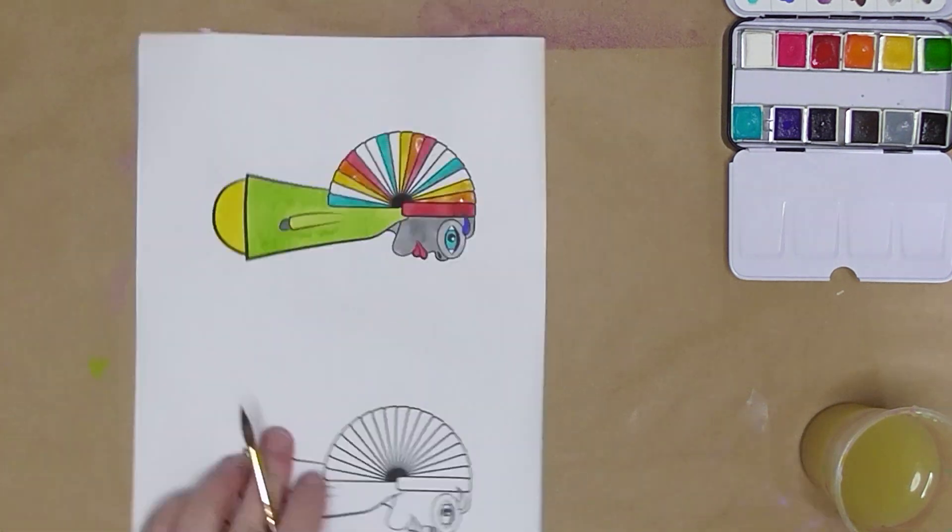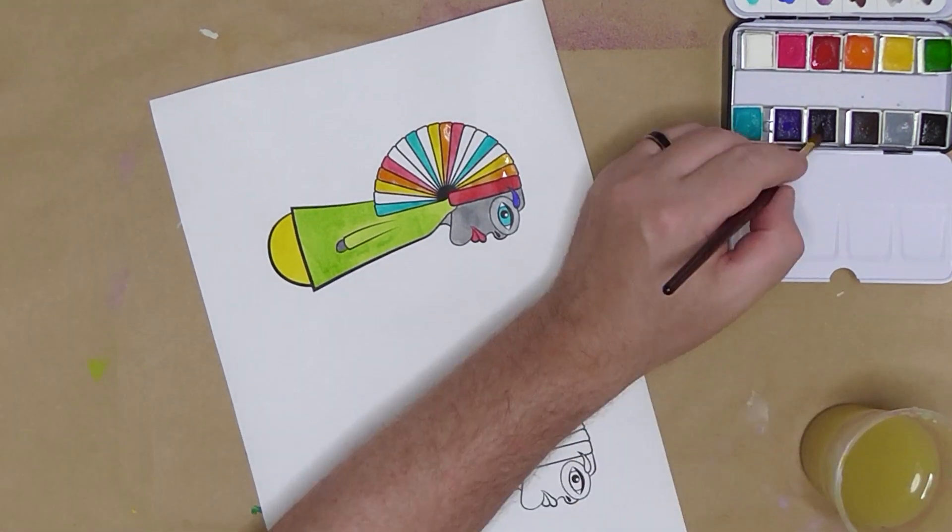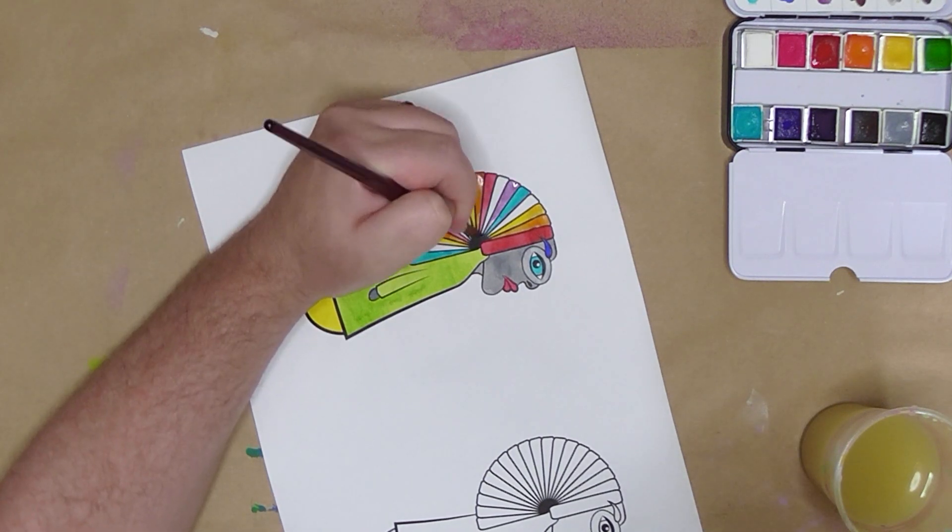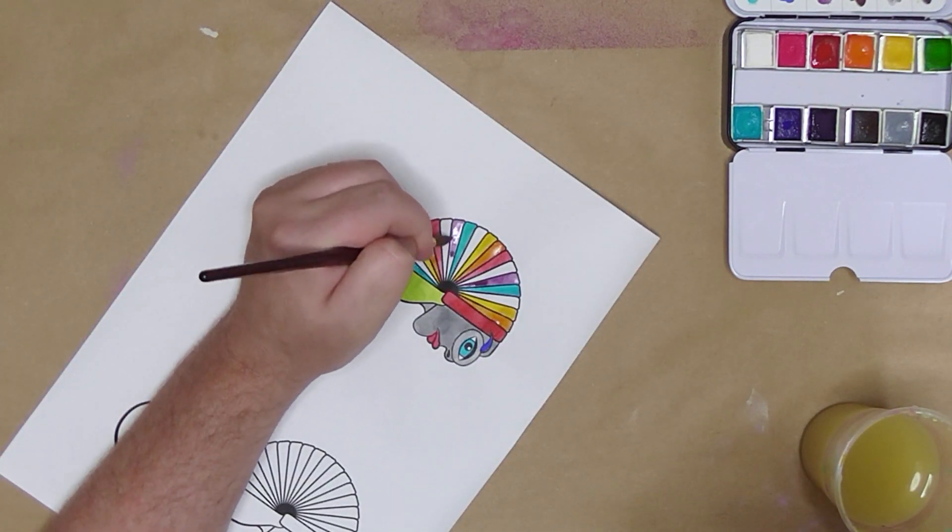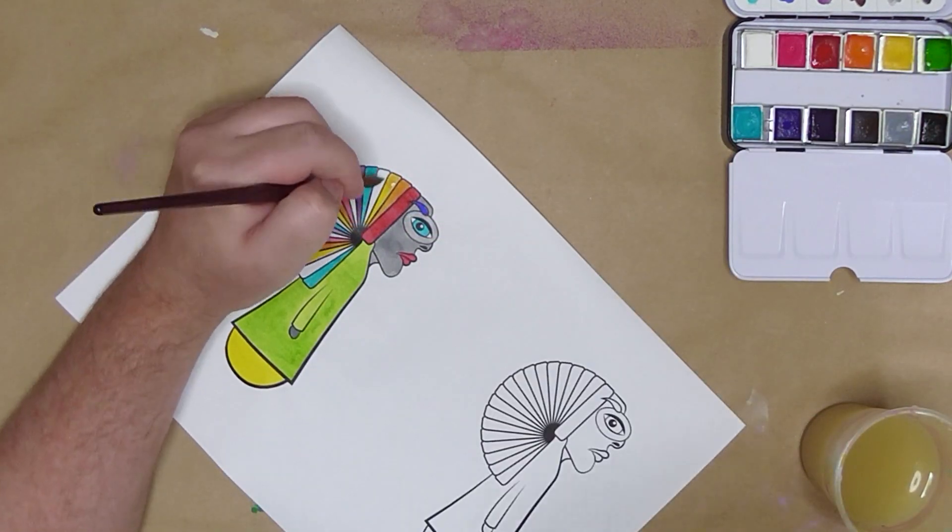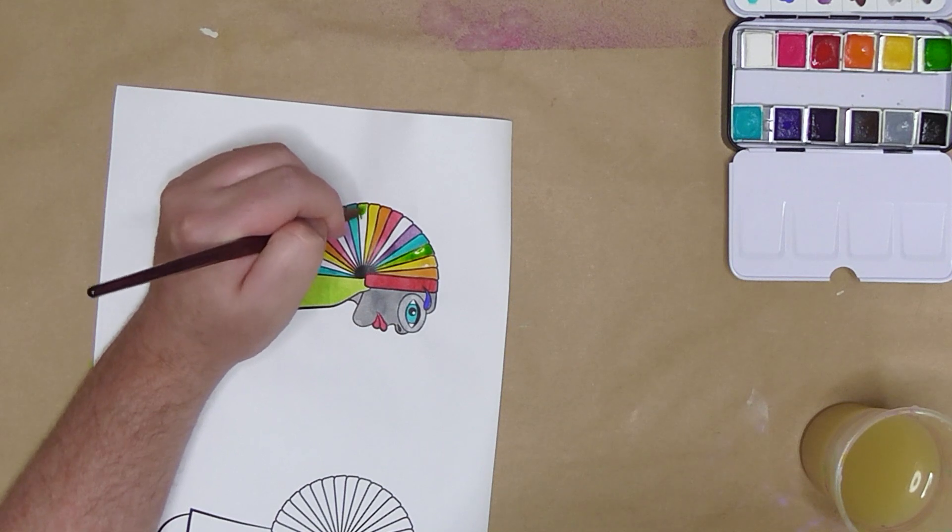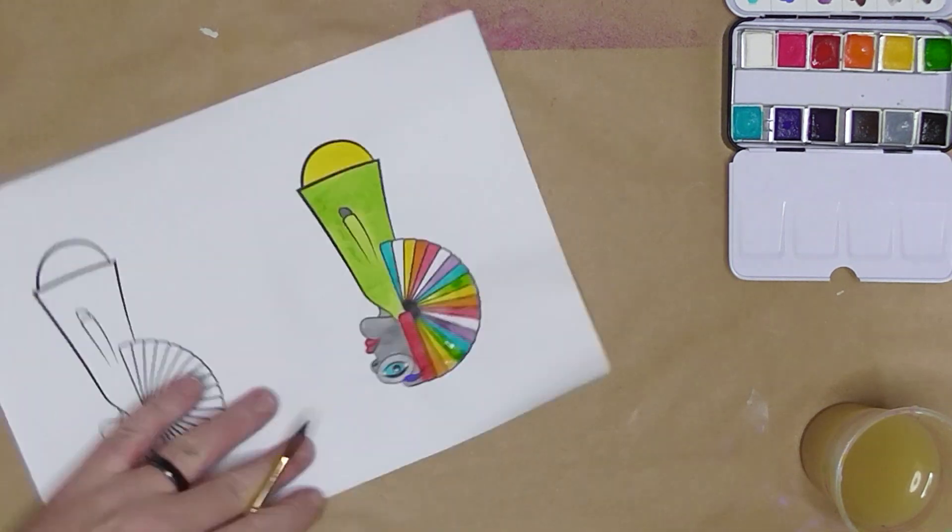But, yeah, you know, I like my bright colours and any excuse to put a rainbow in. So that's what I'm doing. I'm painting kind of alternate colours. So instead of going red, orange, yellow, for instance,